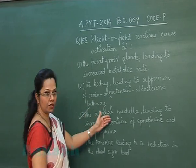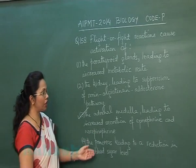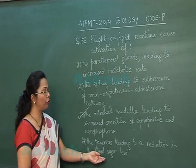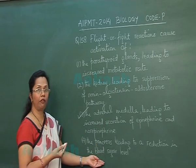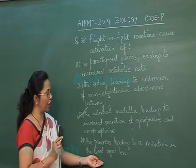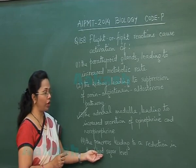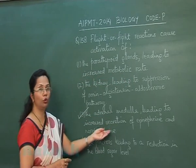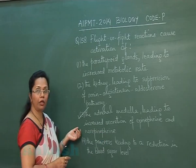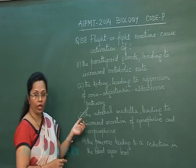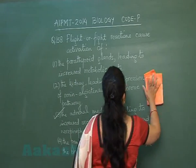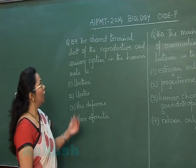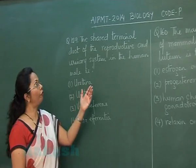The adrenal medulla leading to increased secretion of epinephrine and norepinephrine — this is of course the correct choice. The last option, pancreas leading to reduction in blood sugar, is wrong; rather, epinephrine and norepinephrine cause rising blood sugar through glycogenolysis, breaking down glycogen. So the best answer is activation of the adrenal medulla.